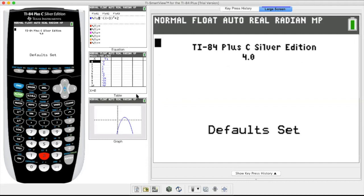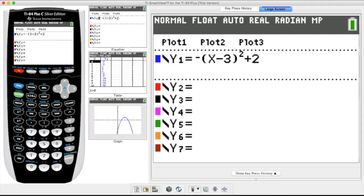Default set, you would see the same thing. So now if I go to y equals, I do not see parametrics. I see a regular old rectangular equation.